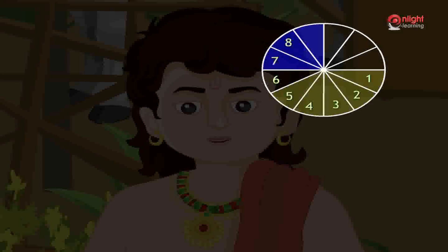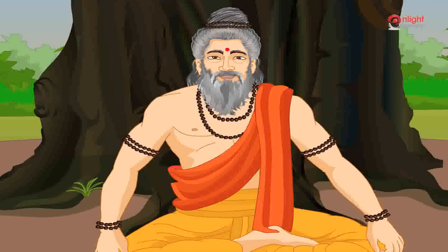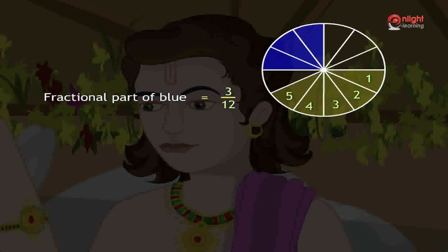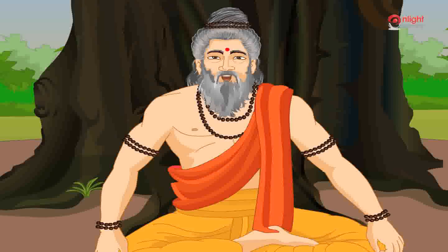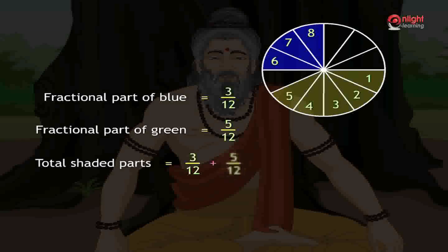Now in the given figure, what is the fraction of the blue color region? The circle is divided into twelve equal parts. Three parts out of twelve is shaded with blue color, so the fraction is three by twelve. Very good. Now what is the fraction of the green shaded part? Five parts out of twelve is shaded with green, so the fraction is five by twelve. Very good. Now eight parts out of twelve equal parts are shaded with blue and green color together. We get this sum by adding only the numerator of the fractions three by twelve and five by twelve.